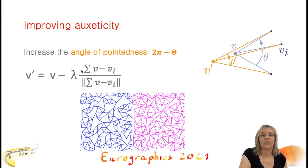As said earlier, after our pruning algorithm, we apply a vertex displacement step. We observe that the angle of pointedness on average has a great influence on the Poisson's ratio. In order to improve the auxeticity, we therefore move each vertex in the mean direction of its incoming edges, scaled by a certain factor, so that the angle of pointedness increases. The pruned network is shown in blue, and after vertex displacement, we get the pink network. We call it the spiky network because it looks more spiky.